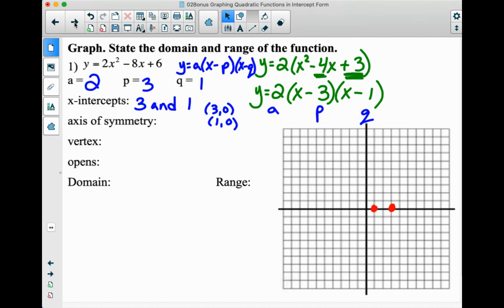Now, how will we find the axis of symmetry? We've just got to find what's right in the middle of 3 and 1, the two dots we have there. Right in the middle of 3 and 1 is 2. But if you didn't know what was right in the middle, you can always add those x-intercepts together and divide by 2. So 3 plus 1 is 4, divided by 2 is 2. So this will be our axis of symmetry at x equals 2.